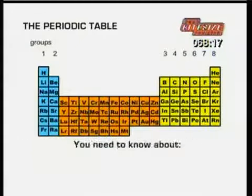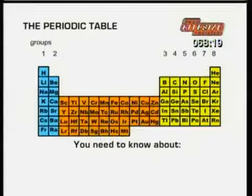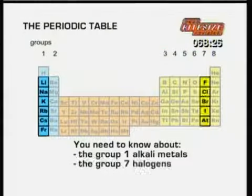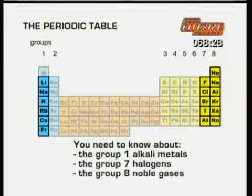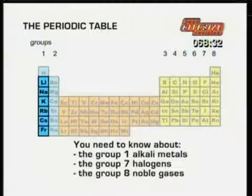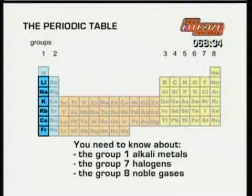Now we'll look at the parts of the periodic table you need to know about: the group 1 alkali metals, the group 7 halogens, and the group 8 noble gases. First, the group 1 alkali metals.